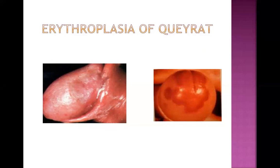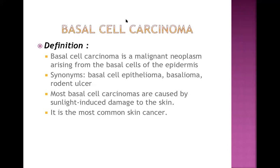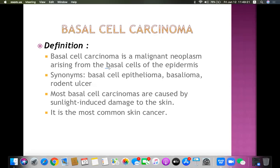Now let's talk about basal cell carcinoma. By definition, basal cell carcinoma is a malignant neoplasm arising from the basal cells of the epidermis. Our epidermis has multiple layers: the lowermost is the stratum basale (stratum germinativum), then stratum spinosum, stratum granulosum, stratum lucidum (only in thick skin), and finally stratum corneum. Basal cell carcinoma arises from basal cells of the epidermis — this is a very important point.